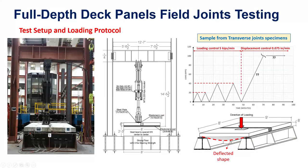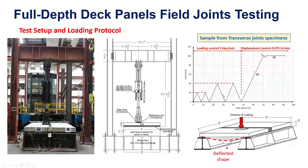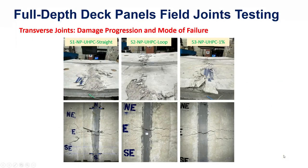The test setup involved monotonic axial vertical loading. We performed some loading and unloading cycles at the beginning to assess overall stiffness, then continued loading to failure to determine whether the specimen would fail at the joint or elsewhere, and to understand the overall structural behavior.